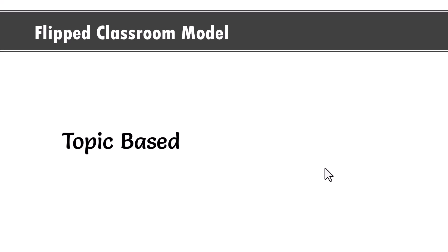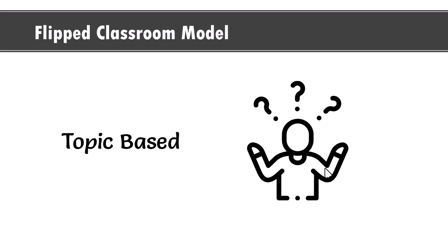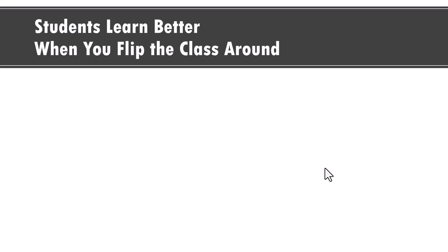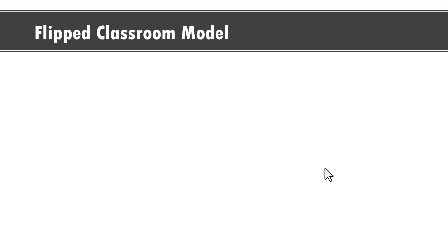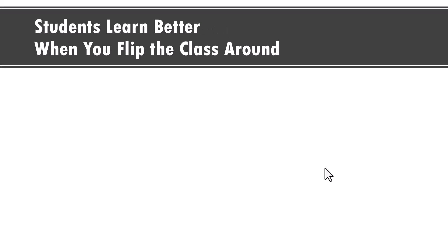Let's take another example: Flipped Classroom Model. Topic-based — it doesn't convey anything about what the slide would contain. A better alternative: instead of saying 'flipped classroom model,' when you say 'students learn better when you flip the class around,' you convey the essence of the slide in just a single sentence.